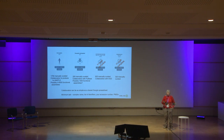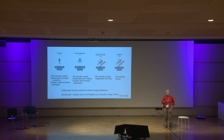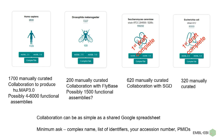We're currently working with FlyBase to collect together the Drosophila complexes as well. We'll have 200 as soon as the current release goes public, and we've still got a long to-do list. I'm estimating probably about 1,500 functional assemblies — it's a smaller proteome than humans, so we wouldn't expect the same numbers.